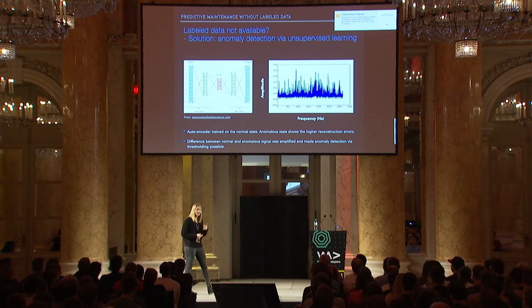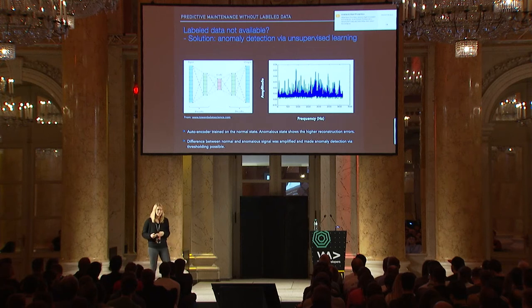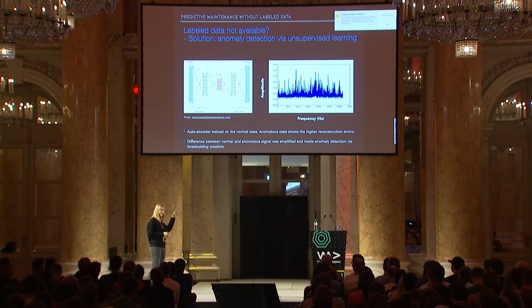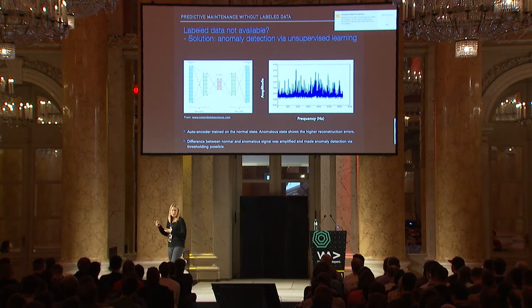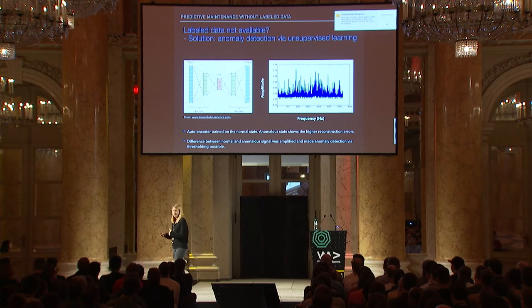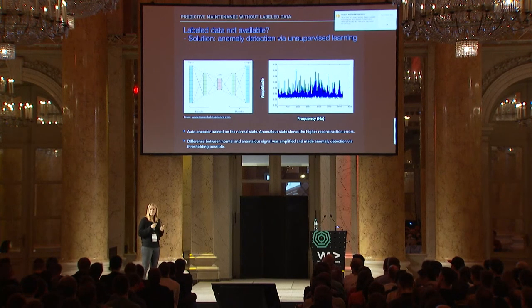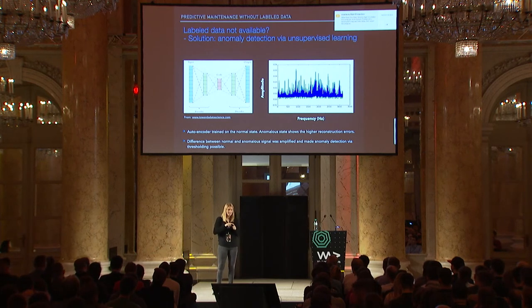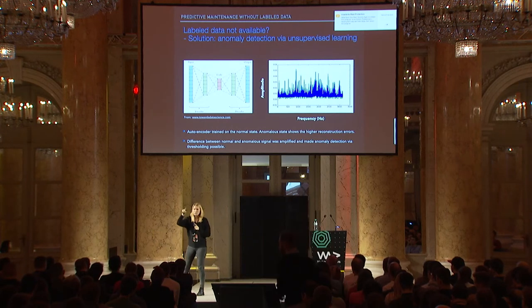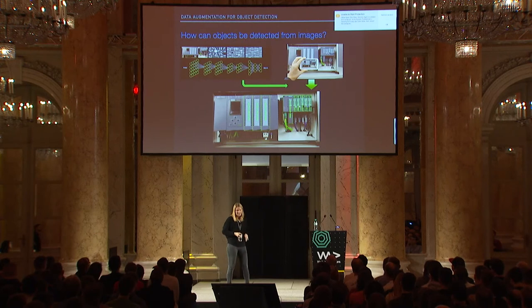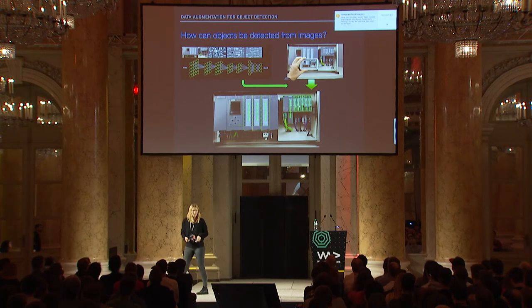We found this out three months before the bearings break — which enabled further value. The wind park only had two ships with cranes to exchange ball bearings, and sending a ship to the offshore site was the expensive part, not the bearing itself. With three months' advance notice, you can plan the ship's route in a much smarter pattern — instead of a star shape back to the hub, you can optimize the route across multiple windmills and really save money.